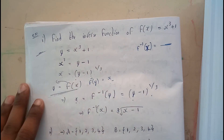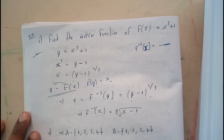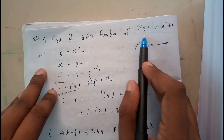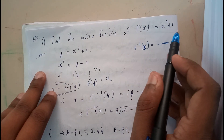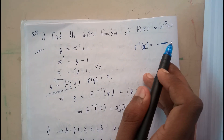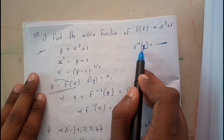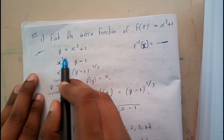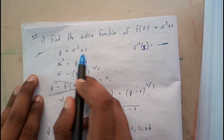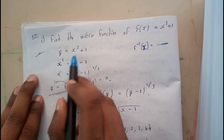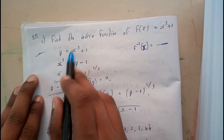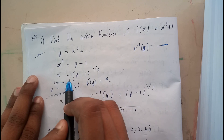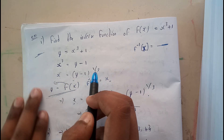I'll be explaining it once again. Given f of x equals x cube plus one, the final goal is to find f inverse of x. Assuming f of x equals y, so y equals x cube plus one, and finding the value of x: x cube equals y minus one, x equals y minus one whole to the power of one by three.